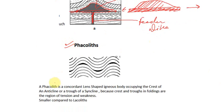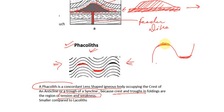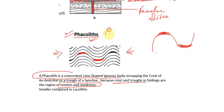Phacolites are also concordant, lens-shaped igneous bodies. They form when folded strata is present — they occupy the crests and troughs of folds. The crests and troughs are regions of tension and weakness — the weakest point in a fold is at the crest or trough, where tension is highest. So magma accumulates there. Phacolites are concordant because they are not intruding the layers but are parallel to them.